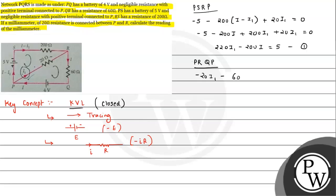Applying KVL to this loop, we are moving from negative to positive side of the 4 volt battery, so we have a gain of potential, plus 4, and that equals zero. Simplifying this equation, we get 20 I1 plus 60 I equals 4. This is expression number 2.